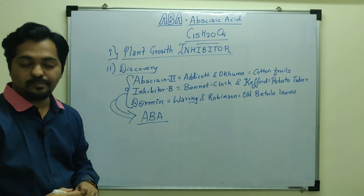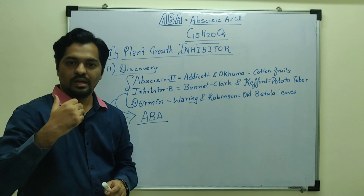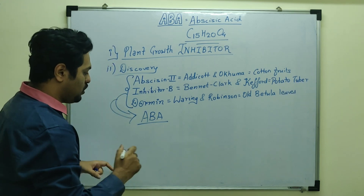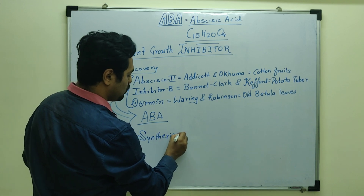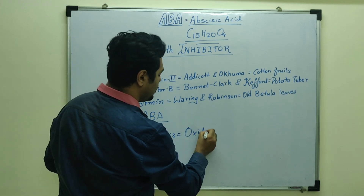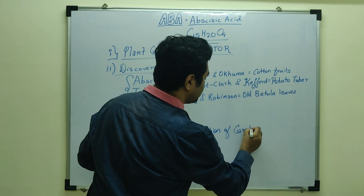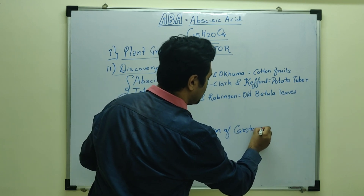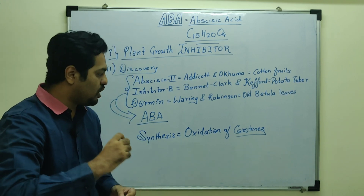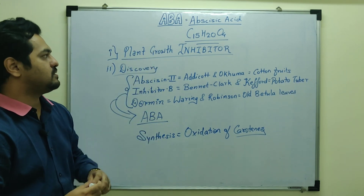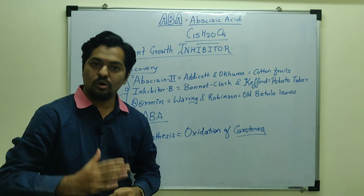Just as we discussed biosynthesis for all plant hormones, abscisic acid's biosynthesis is also important. It is produced by oxidation of carotene. Carotenes are pigments under the category of carotenoids, and their oxidation produces abscisic acid, the plant growth inhibitor.